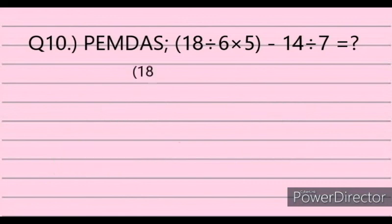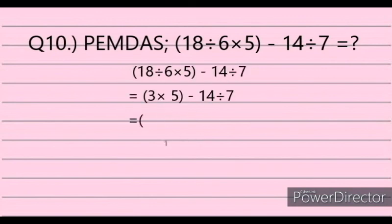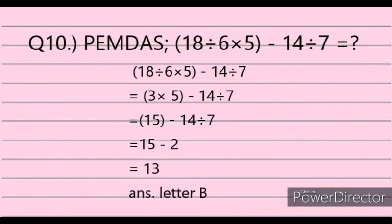Solution: 18 divided by 6 times 5 minus 14 divided by 7. First, 18 divided by 6 equals 3, so 3 times 5 equals 15. Then 14 divided by 7 equals 2. Therefore 15 minus 2 equals 13. The answer is letter B.